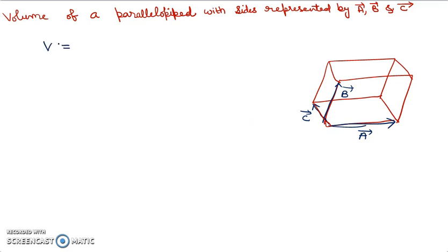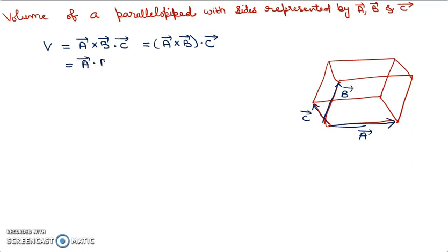This volume is given by a cross b dot c — meaning you solve the cross product a cross b first, and then take the dot product with c. In fact, you can move the dot or cross forward: you may also write a dot (b cross c), meaning first take the cross product of b and c. In the same manner, you may write c dot (a cross b).